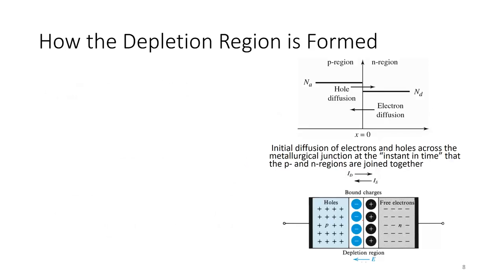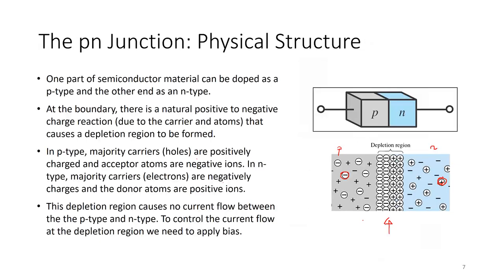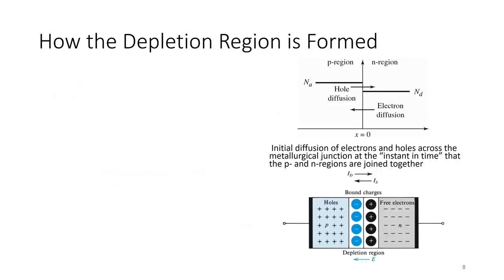Let's look at how the depletion region is formed. Why is there a depletion region? At the depletion region, only negatively charged acceptor atoms and positively charged donor atoms are next to each other — there are no carriers. In this area, you do not see any holes or electrons.